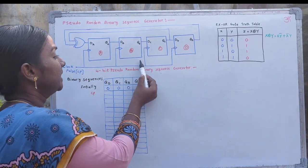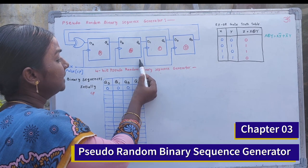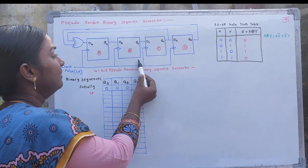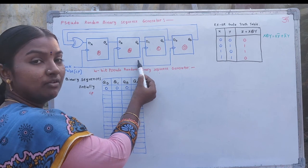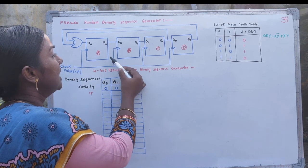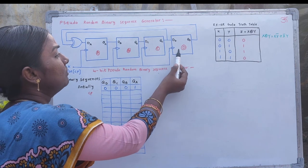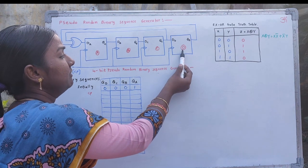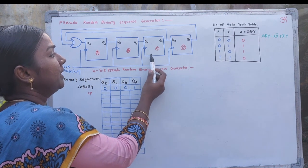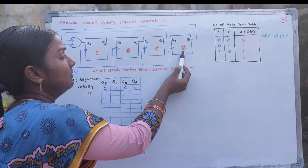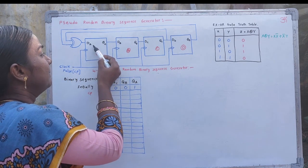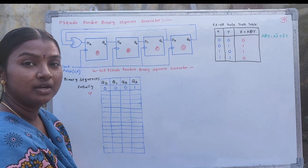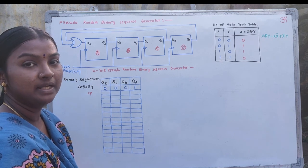This is the logic diagram of a 4-bit pseudo-random binary sequence generator. It consists of D-type flip-flops handling 4 binary bits, so we use 4 flip-flops: A, B, C, and D. There is a suitable feedback from the C flip-flop and D flip-flop to the first flip-flop A via an exclusive OR gate. By using this feedback, we are going to generate the pseudo-random binary sequence.